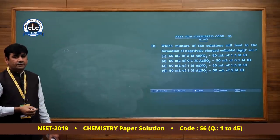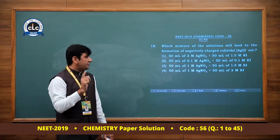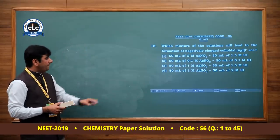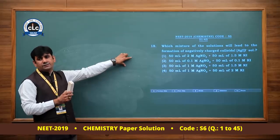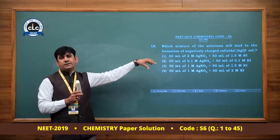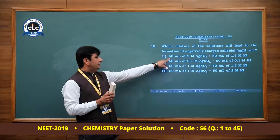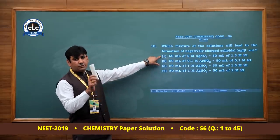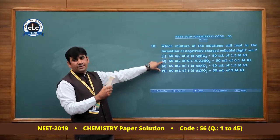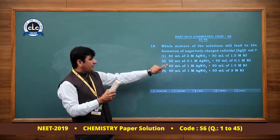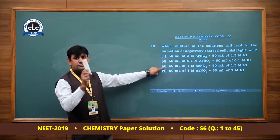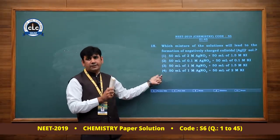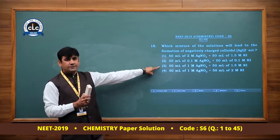Question number 18: Which mixture will lead to formation of negatively charged colloidal AgI sol? Negative sol forms when I⁻ ion adsorption on precipitate surface is more than Ag⁺. In option 1: millimoles of Ag⁺ = 100, I⁻ = 75, so positively charged sol forms. In option 2 they are equal. In options 3 and 4, millimoles of I⁻ > Ag⁺, so negatively charged sol forms. Options 3 and 4 are correct.